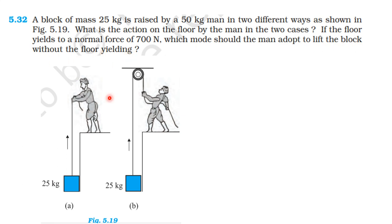In the two cases, the man's weight acts downward, and the floor exerts a pushing force upward. In the first case, the man applies an upward pulling force on the block. For every action there is an equal and opposite reaction. In the first case the man applies a pulling force; in the second case also a pulling force acts.